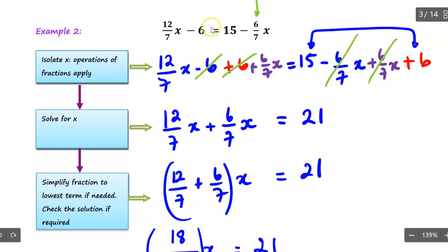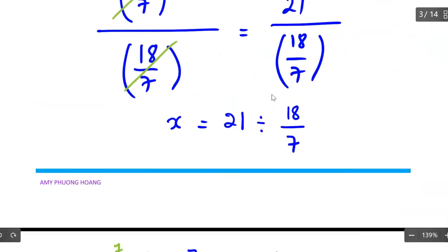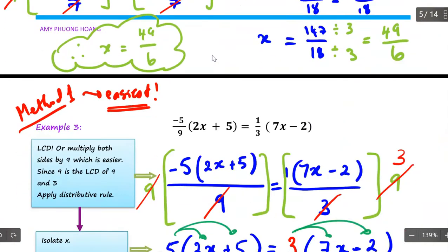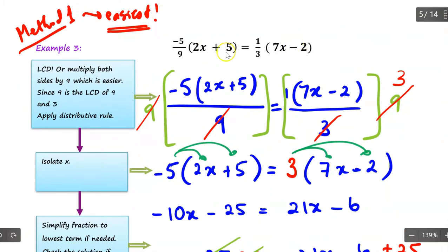For example number two, the best approach is to just isolate x. In the end you have the same denominator on one side to work with. The difference between example number two and example number three is that in example number three you can immediately combine everything and write it as one fraction equal to one fraction, then multiply both sides to get rid of all the denominators.